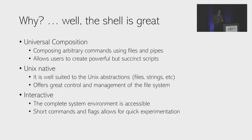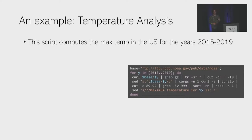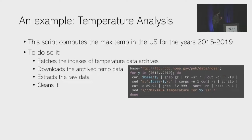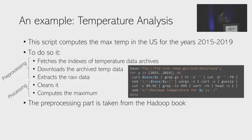Let's look at an example script to see the power of the shell. This script computes the maximum temperature in the US for the years 2015 to 2019, based on data from some national organization. To do so, it first fetches the indexes of temperature data archives, then downloads this archive data, then extracts it with GUNZIP, cleans the data, and computes the maximum by sorting and taking the first line of the output. The first three steps we call preprocessing and the rest processing. We took it from the Hadoop book, where it's used for an exercise.